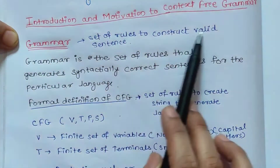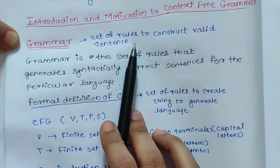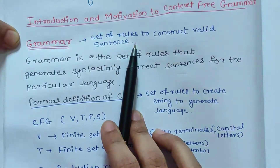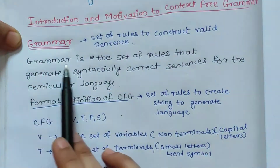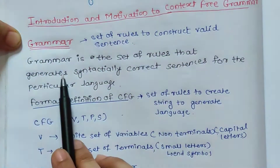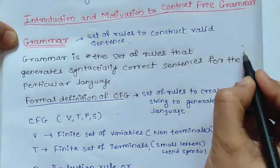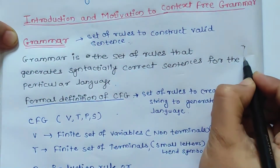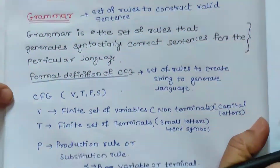Grammar is a set of rules to construct valid sentences. Like our general language, that is English, there are various rules through which we can create sentences for communication. In the same way, in theory of computation, a language — that is a collection of strings — is made up of certain rules that we call context free grammar. Grammar is a set of rules that generates syntactically correct sentences for a particular language, and for any communication we need some grammar to make syntactically correct sentences.